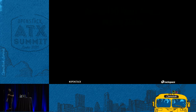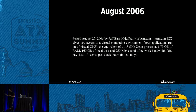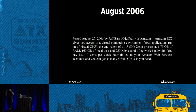But then the game changed forever in August of that year when EC2 actually dropped. This is the actual press release: Amazon EC2 gives you access to a virtual computing environment. Your applications run on a virtual CPU equivalent to a 1.27 GHz Xeon processor, with 1.75 GB of RAM, 160 GB of local disk. You pay just 10 cents per clock hour, billed as you use it, and you can get as many virtual CPUs as you need.